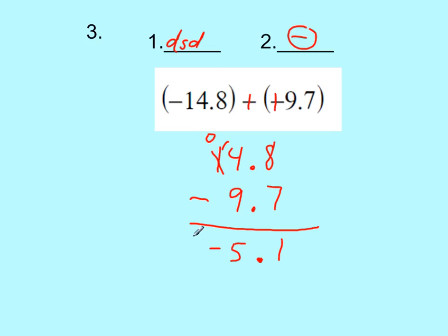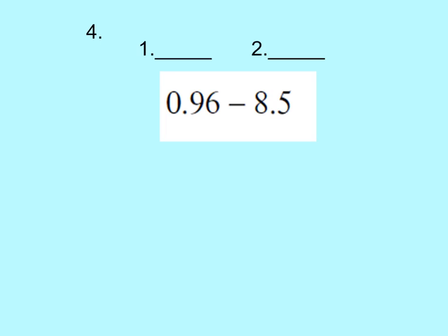Number four: we're going to add its opposite. First term is positive, second term is negative, so this is a DSD, different signs difference. More negatives or more positives? There are more negatives here, so our answer's going to have a negative. Now we're going to stack it with the largest number ignoring signs, the largest number on top, so we're going to put 8.5 on top and we're going to subtract. Now we've got to make sure we line up those decimal points: 9 and 6.